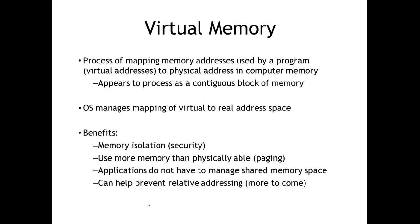With most general-purpose operating systems like Windows, we have virtual memory. What virtual memory gives us is a layer of abstraction from the actual physical memory. We have virtual memory that maps to physical memory, but that mapping is all handled by the operating system. What the program gets when it runs is one contiguous block of memory — a bunch of addresses that are all sequential — that it can use for its address space.